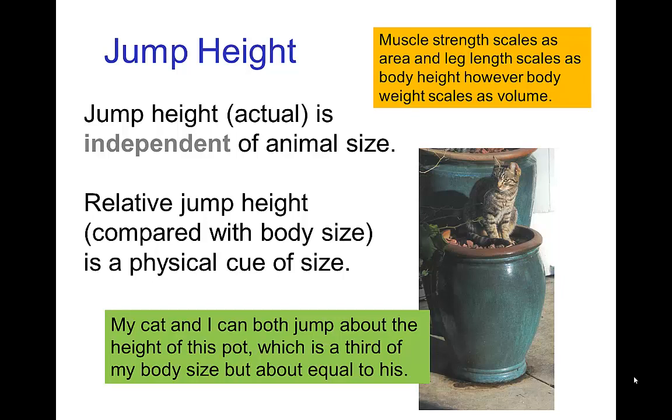Now I have an advantage of having longer legs and much larger muscles. However, I don't jump higher than my cat because I have the disadvantage that I weigh much more than my cat. So the longer legs and larger muscles are almost exactly balanced by the greater weight that I have to lift when I jump.